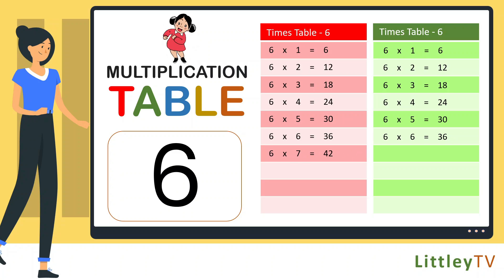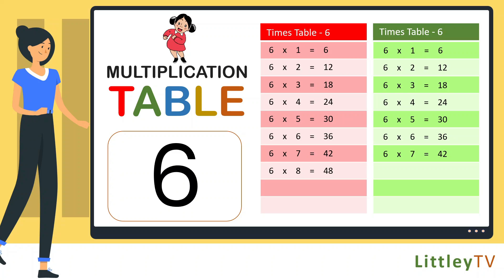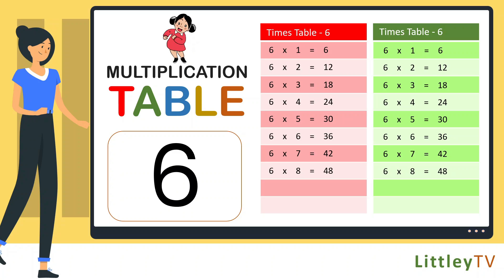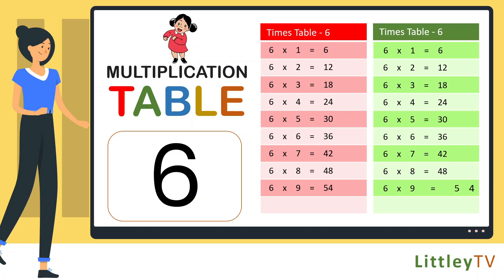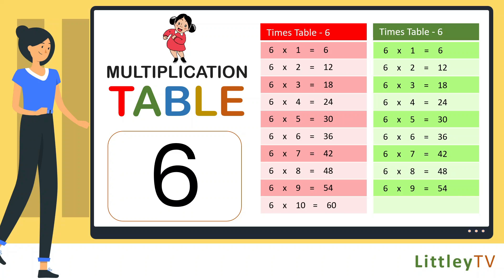6 sevens are 42, 6 eights are 48, 6 nines are 54, 6 tens are 60.